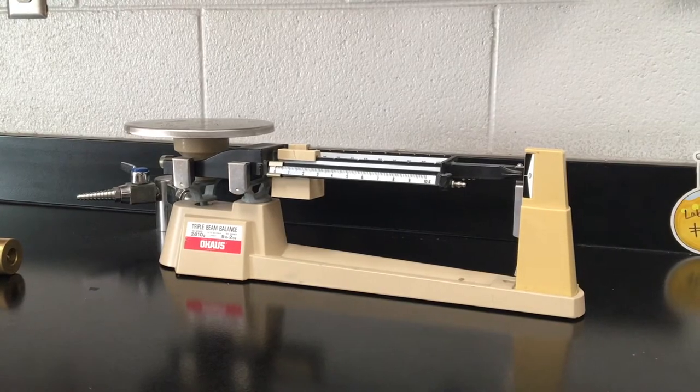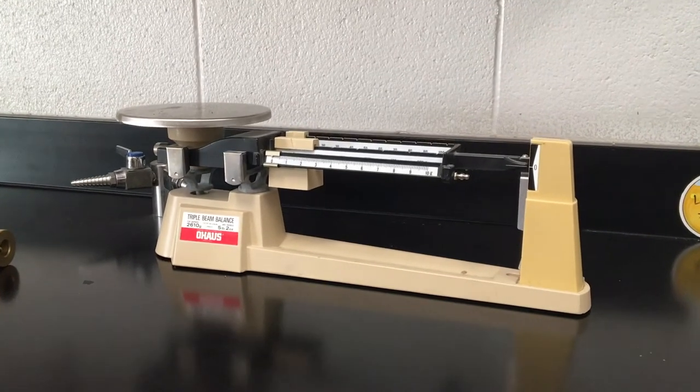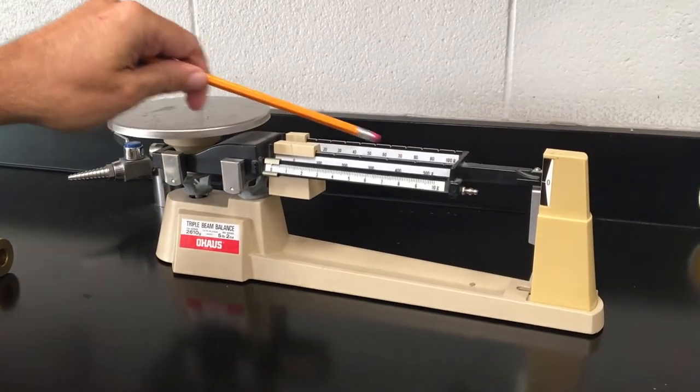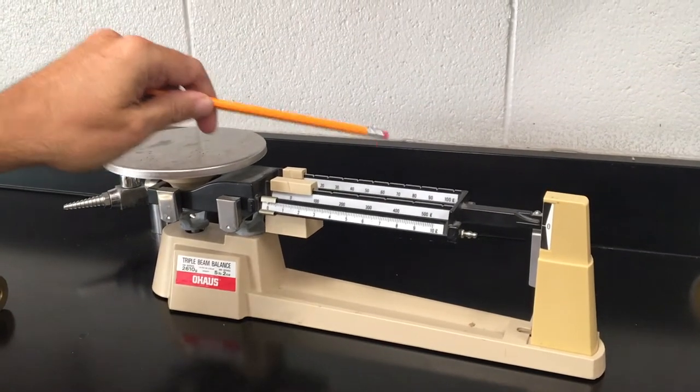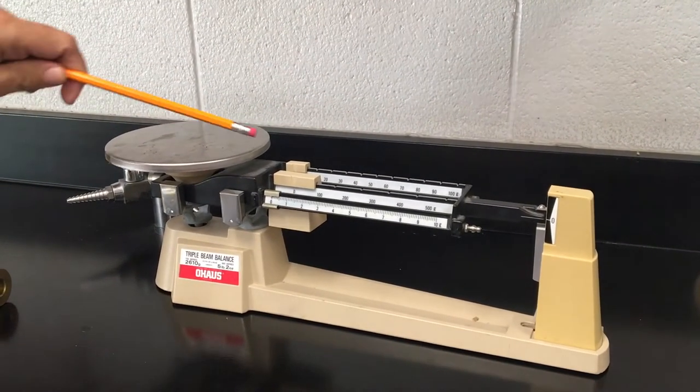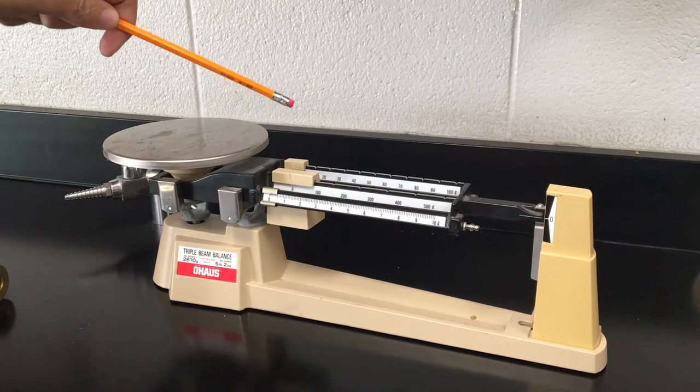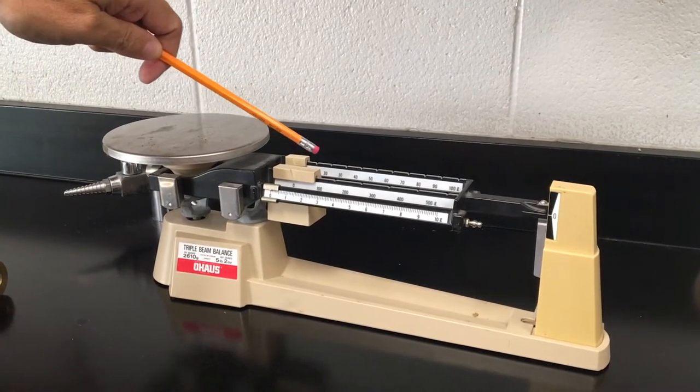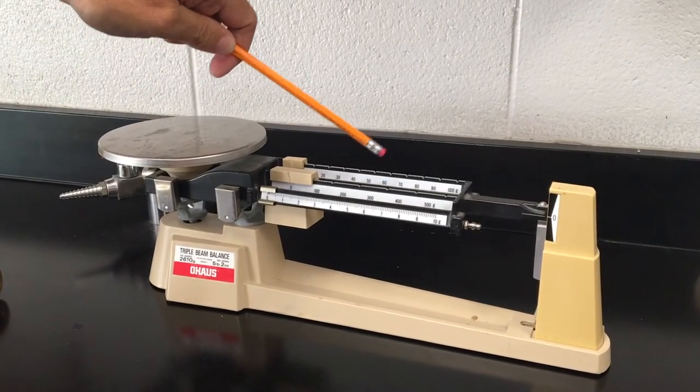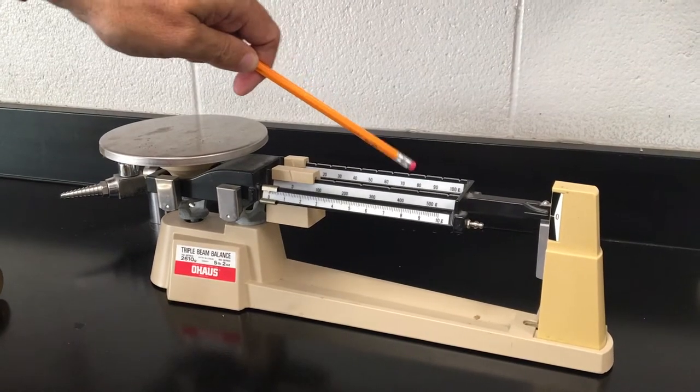The triple beam balance gets its name from the three beams going across. You'll notice the middle beam is in increments of 100 grams: 100, 200, 300, 400, all the way up to 500 grams.